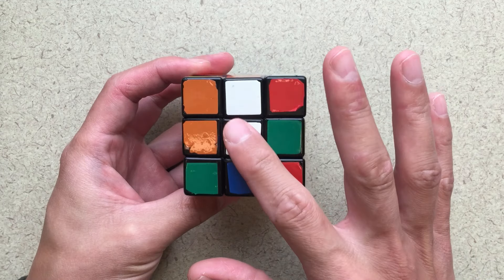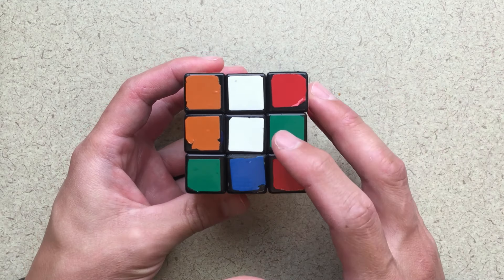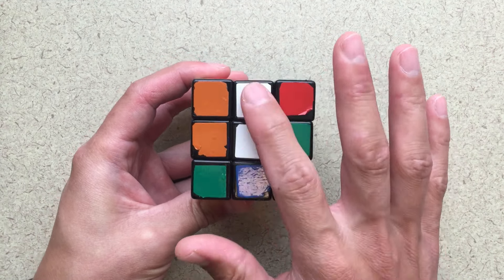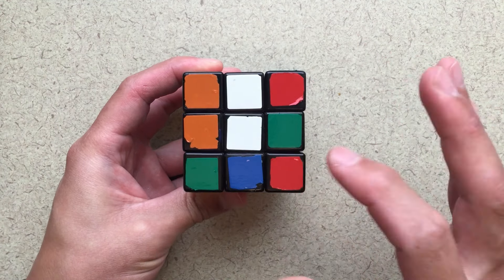So the first step, you're going to choose a color that is going to be your top color and I would encourage you to choose white. White is the color that I use. And the first thing we're going to do is make a cross on the top, whatever your top face is.